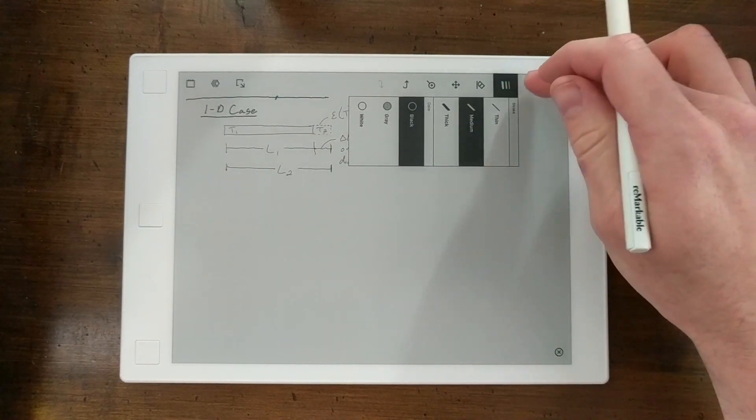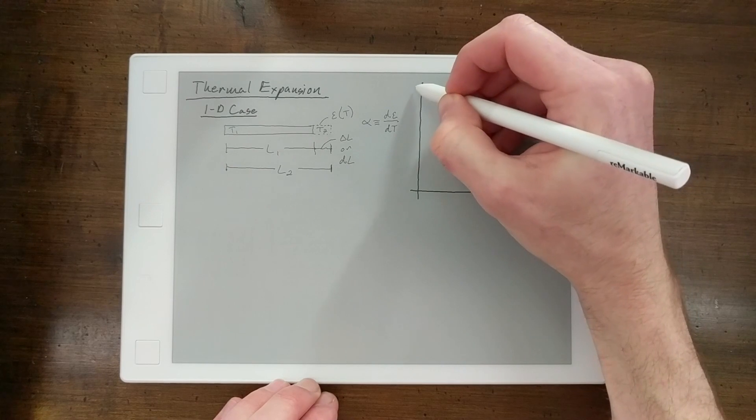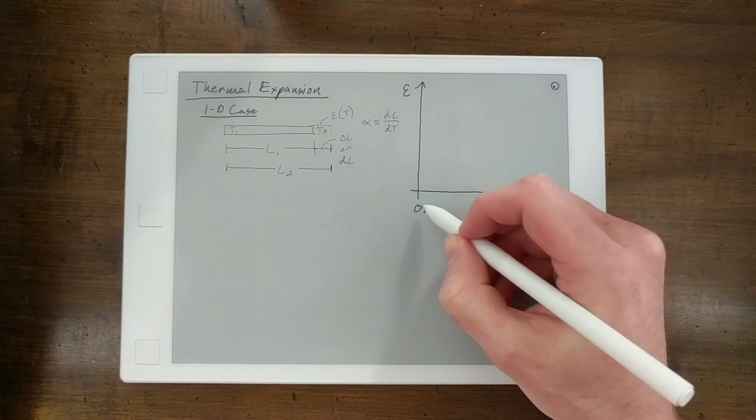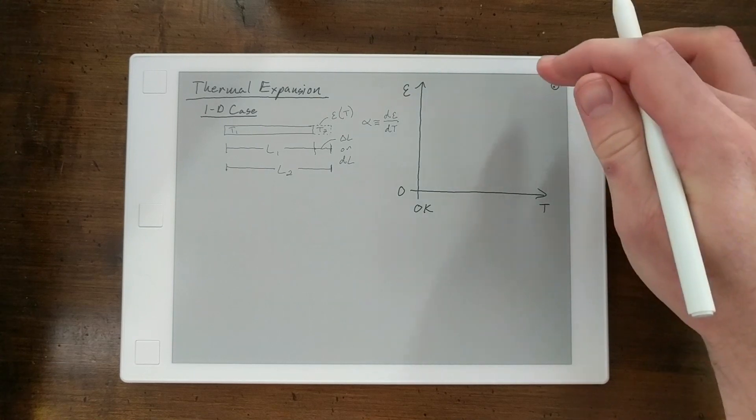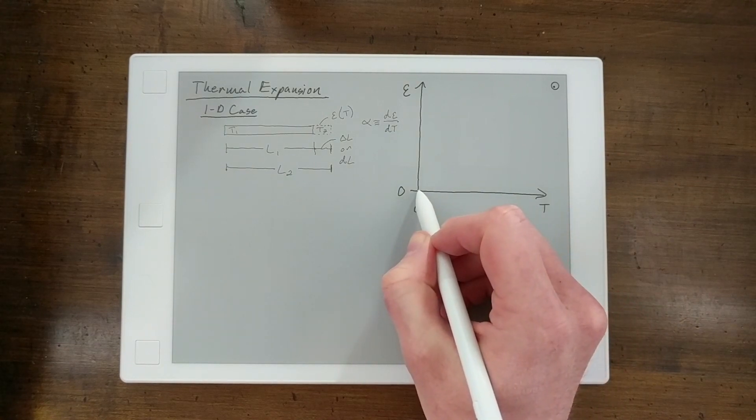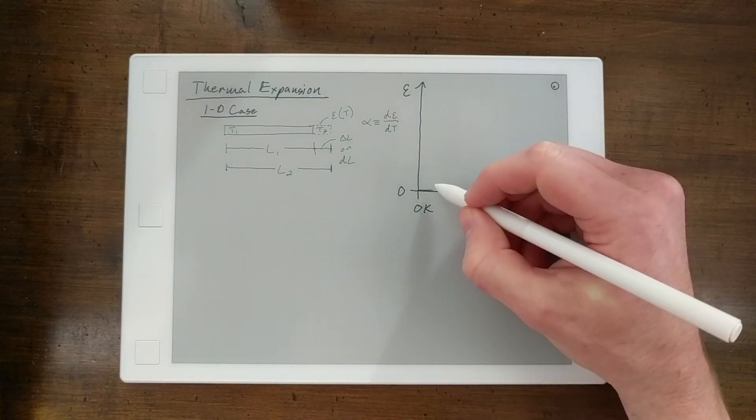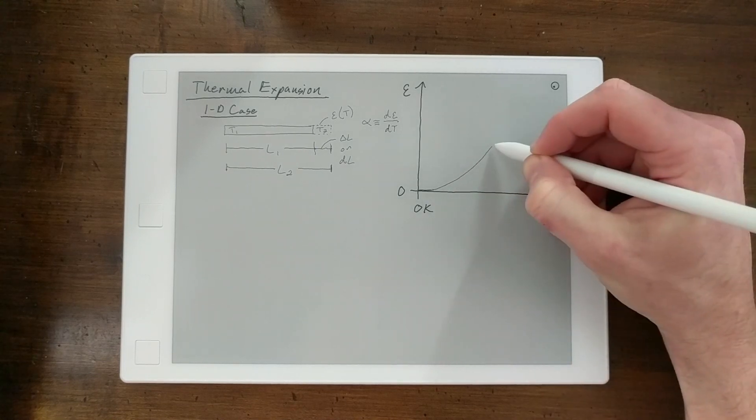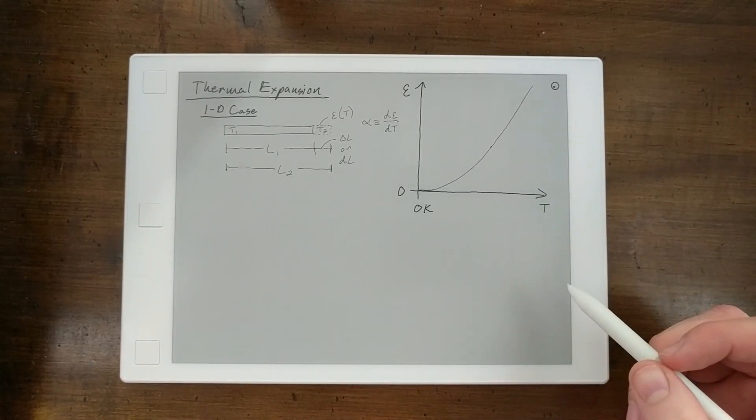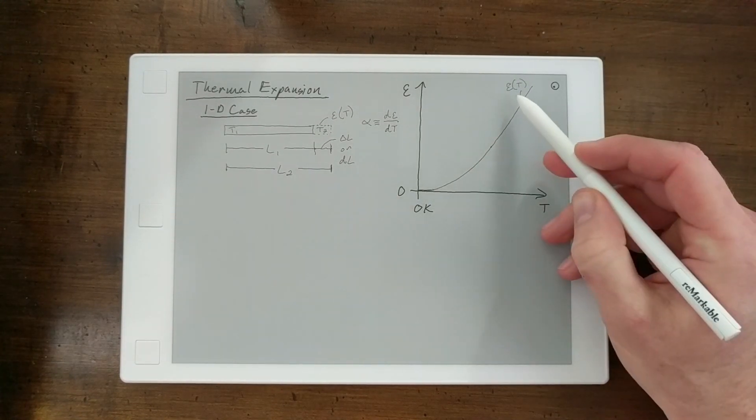So if we actually plot the strain versus temperature curve for a traditional material starting at zero Kelvin, that's absolute zero, and this would be zero strain. What we would see is at zero strain, zero Kelvin, there's really no change at all. The part stays almost exactly the same length. And then at a certain temperature it starts to increase and then it kind of reaches a steady slope or steady state increase with temperature.